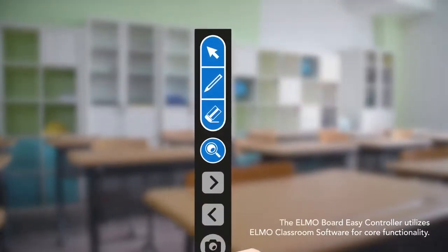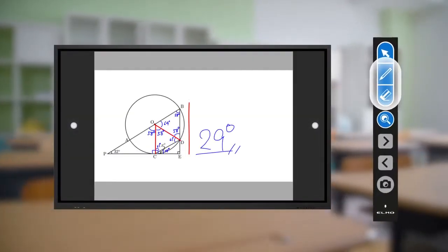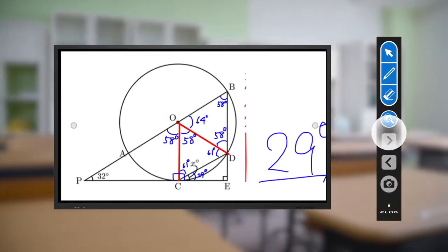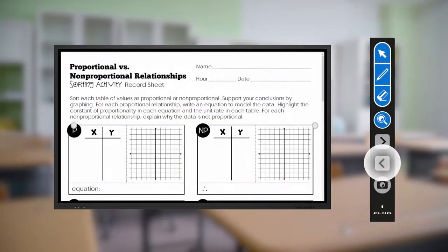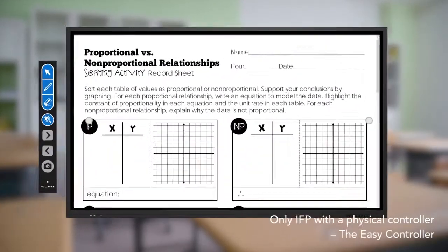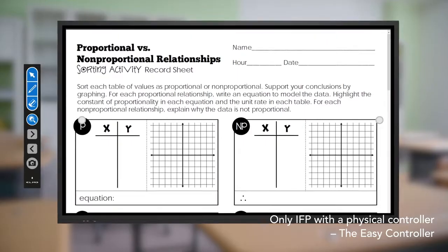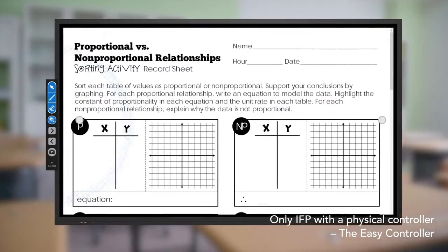The ELMO Board comes with an easy controller that provides one-click access to cameras, a pen and eraser, scale images, or scan forward and backward. ELMO Board is the only IFP on the market featuring an easy-to-use physical control panel outside of the screen.